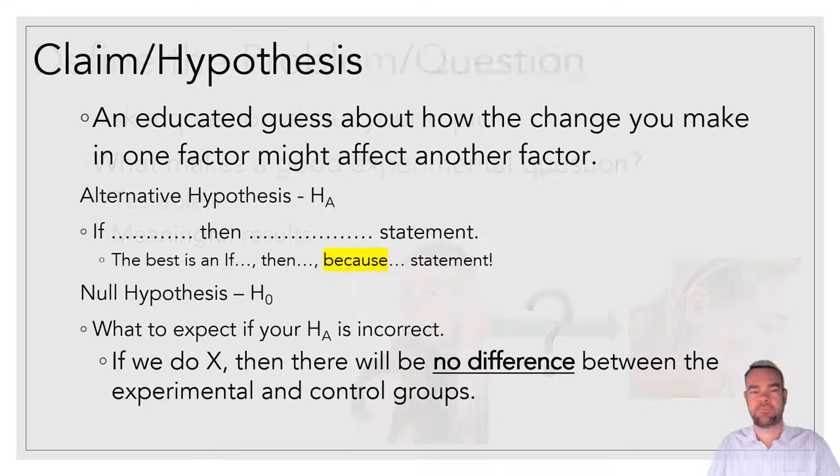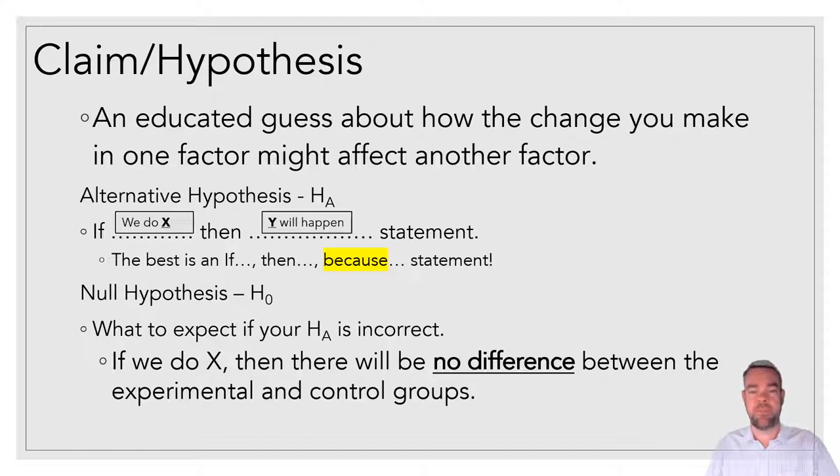We'll find out. So the very first thing you want to do is come up with a claim or a hypothesis. So there's actually two different hypotheses that you have to design. The first one is going to be your alternative hypothesis, which is an if-then statement. If we do X, then Y will happen. Now, I want to go ahead and dispel this myth. It doesn't have to be an if-then statement. There are plenty of great hypotheses out there that are not if-then statements. But if you're having trouble coming up with a hypothesis, this is a good framework for you to consider.